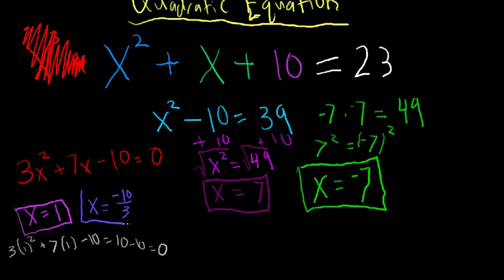Believe it or not, the other solution is x equals negative 10 over 3. I'll leave it to you to plug that back in to make sure it works, but I'll tell you right now that it does. What I'm demonstrating here is that these are very different answers — x equals negative 10 thirds is the same as roughly negative 3.3 repeating as a decimal. So 1 and negative 3.333 repeating seem like very different numbers, but they both solve this quadratic equation.